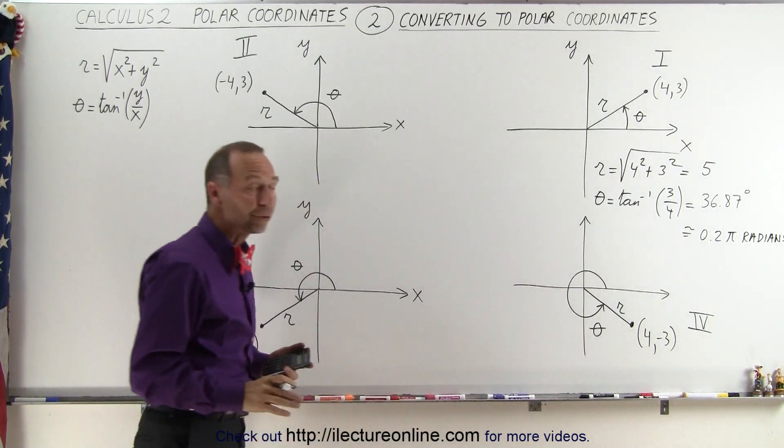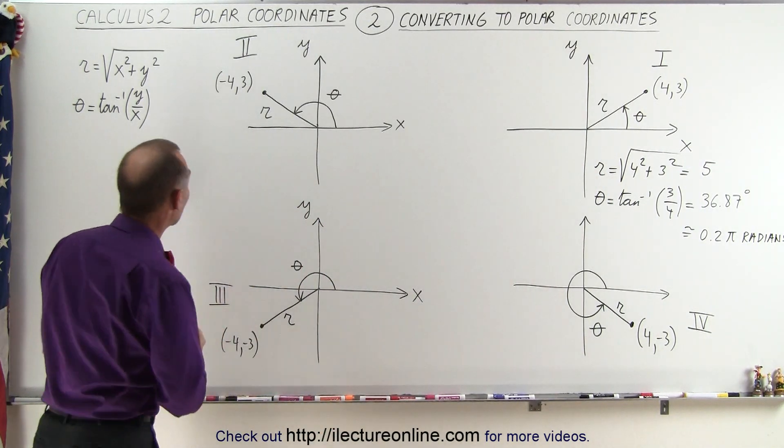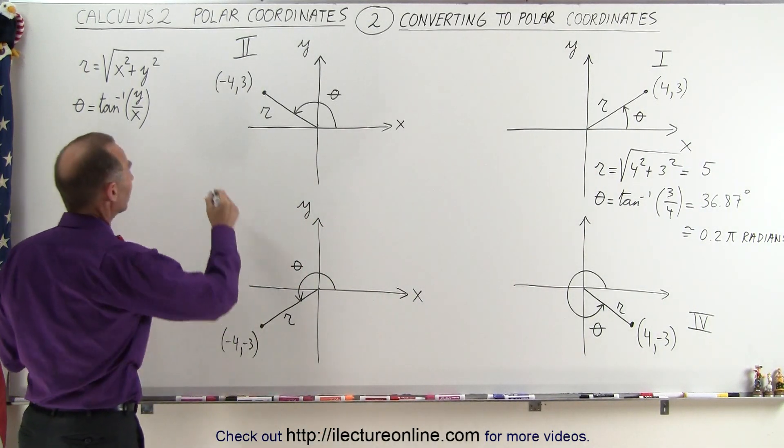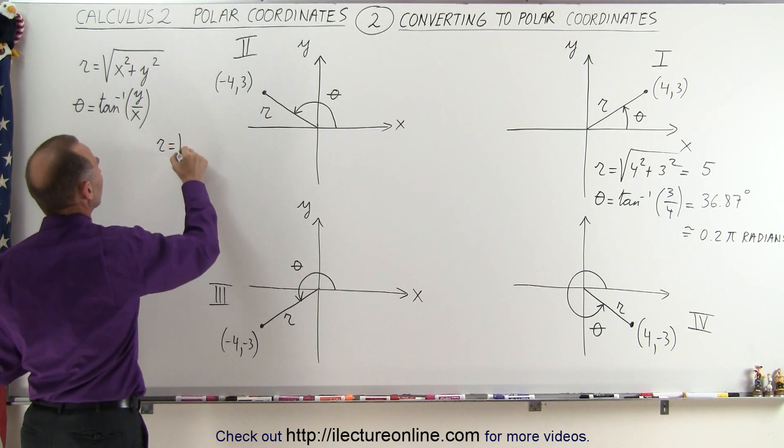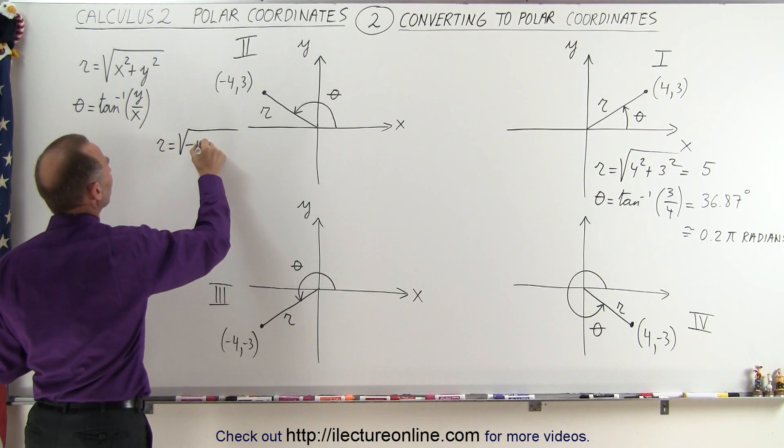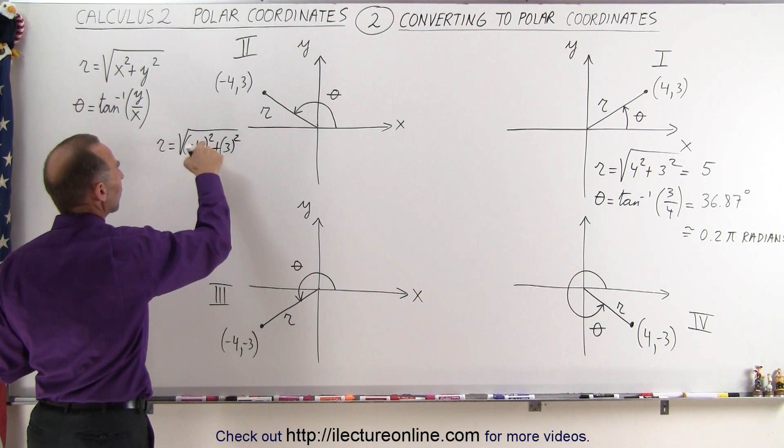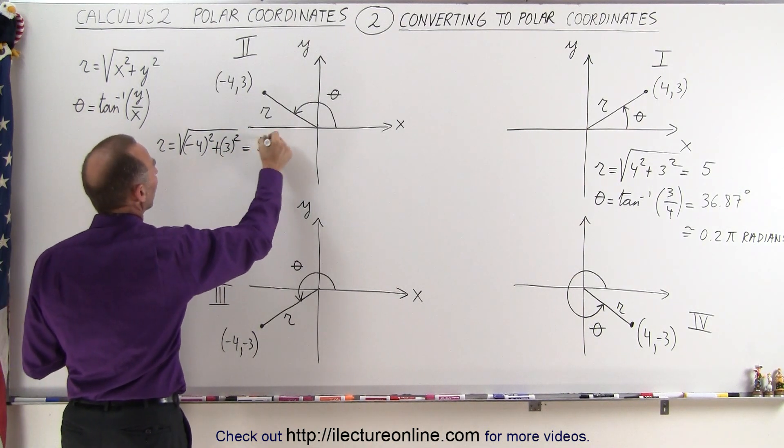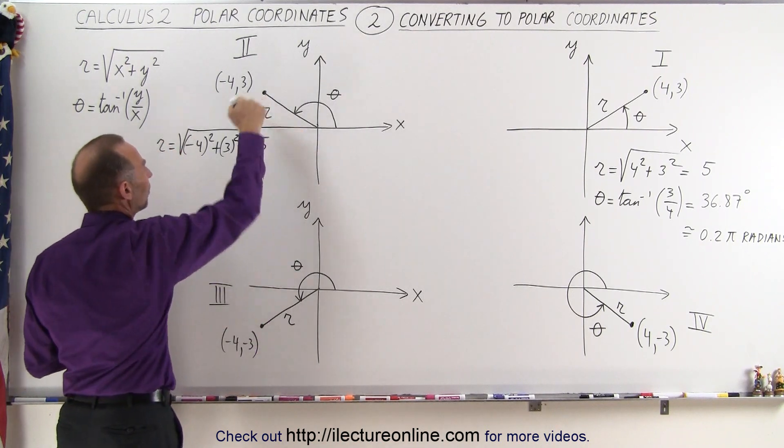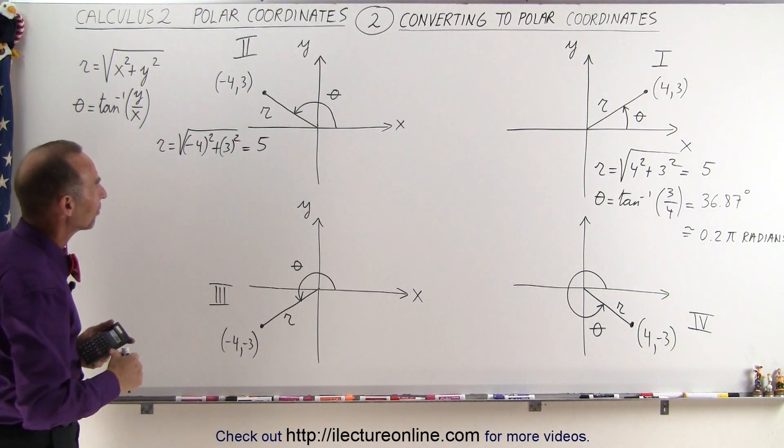Okay, now we go over to quadrant 2. Notice that we should get the exact same value for r. We get r is equal to the square root of minus 4 squared plus 3 squared. And notice the negative gets canceled out when we squared. So again, we get a distance of 5 from the origin to the point.